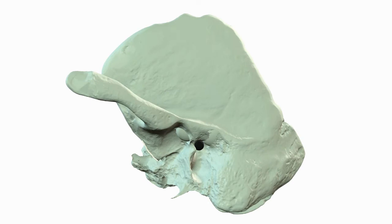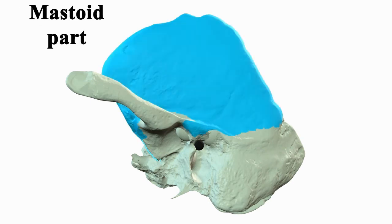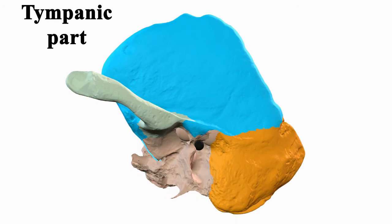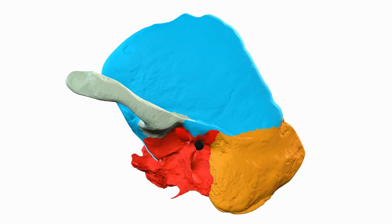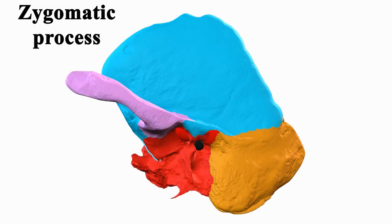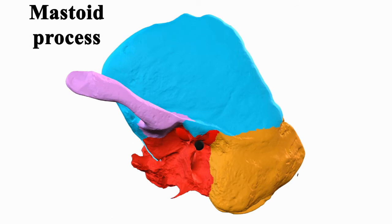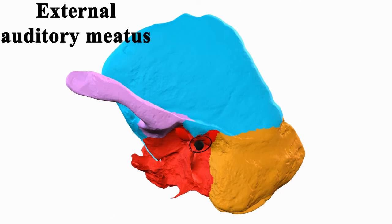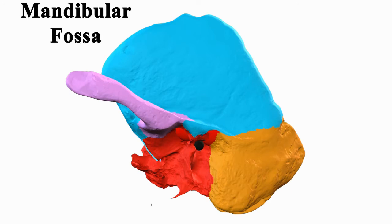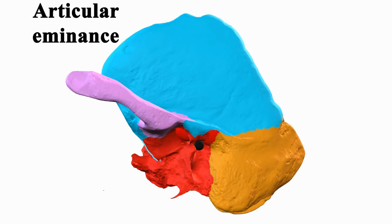The temporal bone consists of squamous part, mastoid part, and tympanic part. It contains the zygomatic process, styloid process, mastoid process, external auditory meatus, mandibular fossa, and articular eminence.